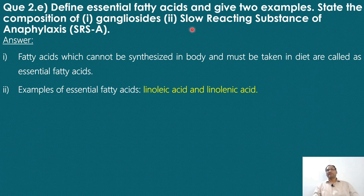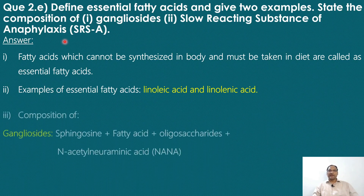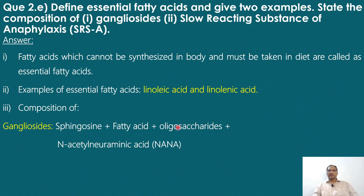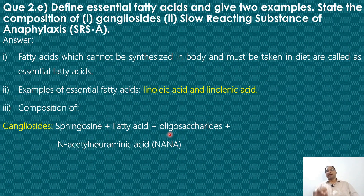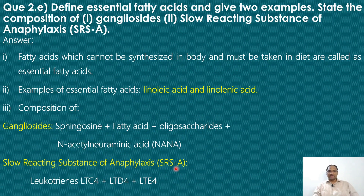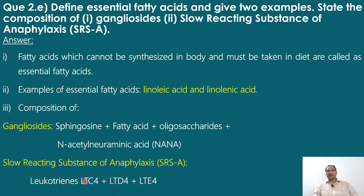The composition of ganglioside includes sphingosine, fatty acid, oligosaccharide, and sialic acid — specifically N-acetylneuraminic acid (NANA). So: sphingosine plus fatty acid forms ceramide, plus oligosaccharide plus NANA. Gangliosides are mainly present in ganglia and dendrites, primarily around the gray matter of the brain. The slow reacting substance of anaphylaxis (SRSA) is produced by mast cells during anaphylaxis and induces inflammation. It is a mixture of leukotrienes: leukotriene C4 (LTC4), leukotriene D4 (LTD4), and leukotriene E4 (LTE4).